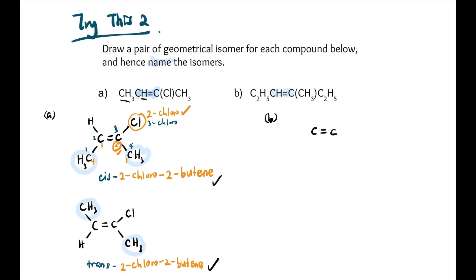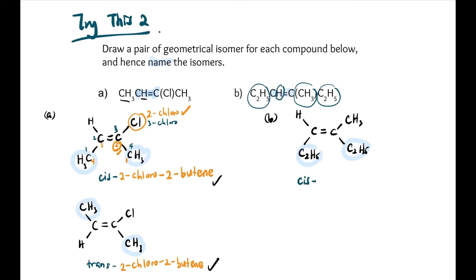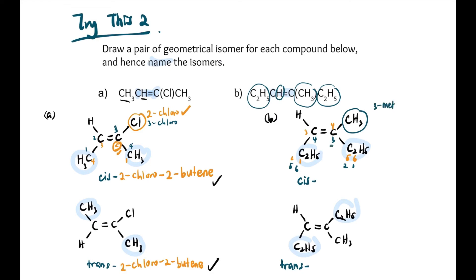Next, compound B — kita first identify di mana karbon-karbon double bond, then buat kangkang. Kita tengok apa kita identify: ada H di sana dengan C2H5. Ada CH3 dengan C2H5. Jadi kita draw: C2H5 on the same side — ini adalah cis. Yang bawah pula kita draw lagi sekali, cuma kita tukar kedudukan C2H5 — kita seterbalik, jadi dia trans. Kalau kita tengok carbon count: ada 6 carbon. Warna biru: 1, 2, 3, 4, 5, 6. Warna orange pun 1, 2, 3, 4, 5, 6. In both cases, anak dia adalah methyl. Kalau warna biru, 3-methyl. Kalau warna orange, 4-methyl. Jadi, kita akan prefer warna biru. Nama lengkap dia cis-3-methyl-3-hexene. Sebab ada 6 karbon dan double bond dekat 3. And bawah itu: trans-3-methyl-3-hexene.